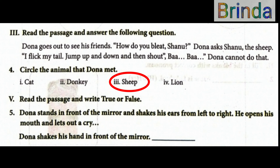Fifth Roman number: read the passage and write true or false. The passage says Dona stands in front of the mirror and shakes his ears from left to right. He opens his mouth and lets out a cry. Now look at the statement: Dona shakes his hand in front of the mirror. That is wrong — it is false, because Dona shakes his ears, not his hands.